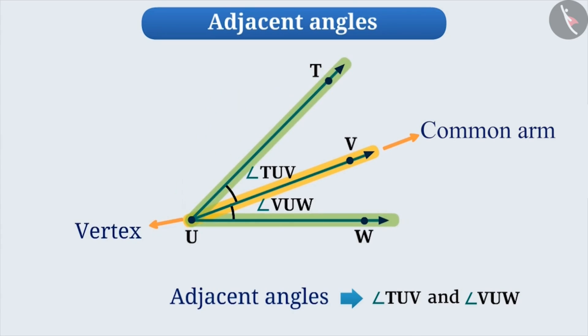The non-common arms are on either side of the common arm, that is, their interiors never cover each other, meaning they will never overlap.